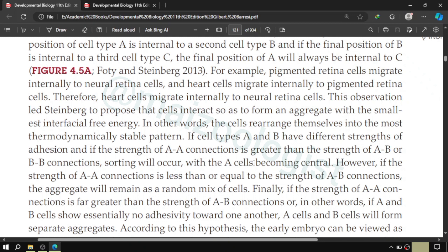However, if A loves to make a connection with A, or in technical terms, we can say that AA connection is thermodynamically more stable than AB connection, then A will move centrally and form connection with other A cells. Finally, if strength of AA connection is far greater than the strength of AB connection, or in other words, if A and B cells show essentially no adhesivity towards each other, then what will happen is that A and B cells will form separate aggregates. They are not going to form aggregates at all.